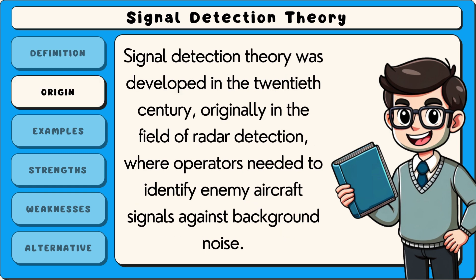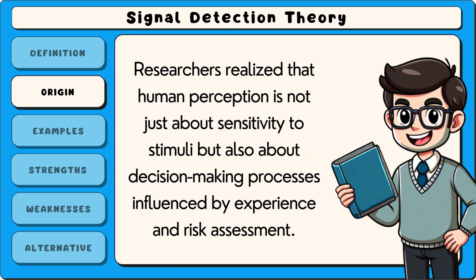Signal detection theory was developed in the 20th century, originally in the field of radar detection, where operators needed to identify enemy aircraft signals against background noise. Researchers realised that human perception is not just about sensitivity to stimuli, but also about decision-making processes influenced by experience and risk assessment.